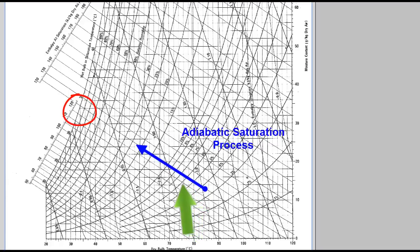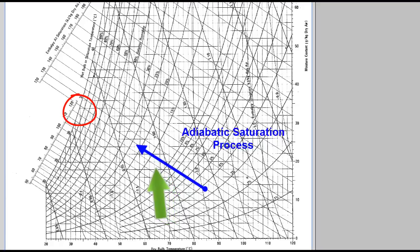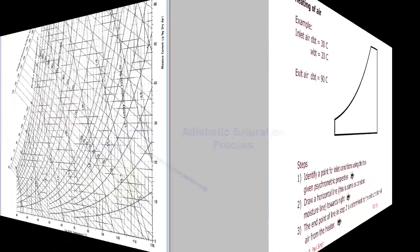In adiabatic saturation, the enthalpy remains constant. So we follow the constant enthalpy line.